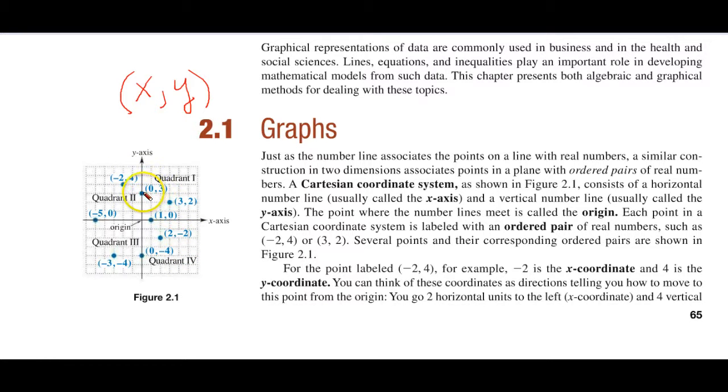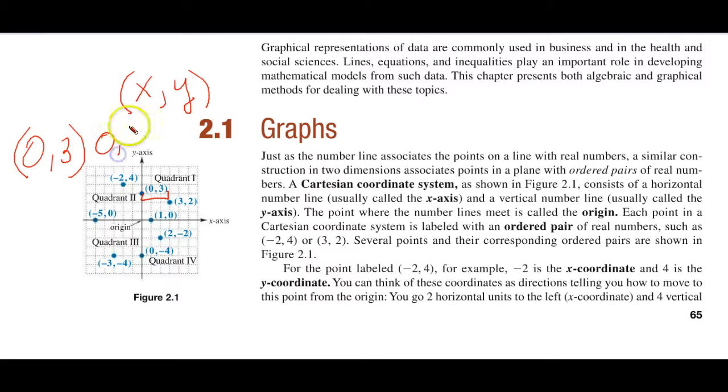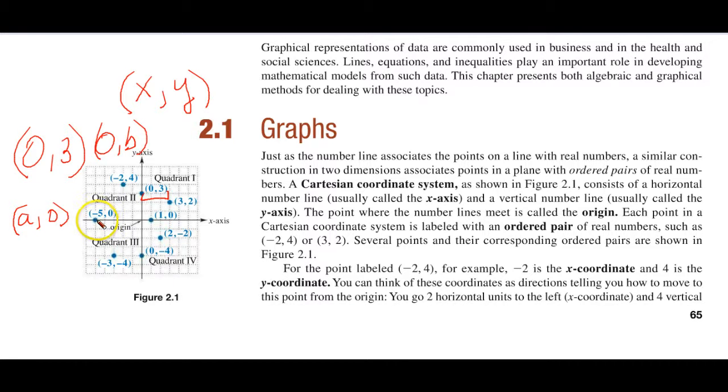If they're on the line, like we see right here, that is 0, 3. This is on the y-axis. You might recall, this is your y-intercept in the form 0, b. And here we see the form a, 0, which is your x-intercept. This would be on the x-axis.